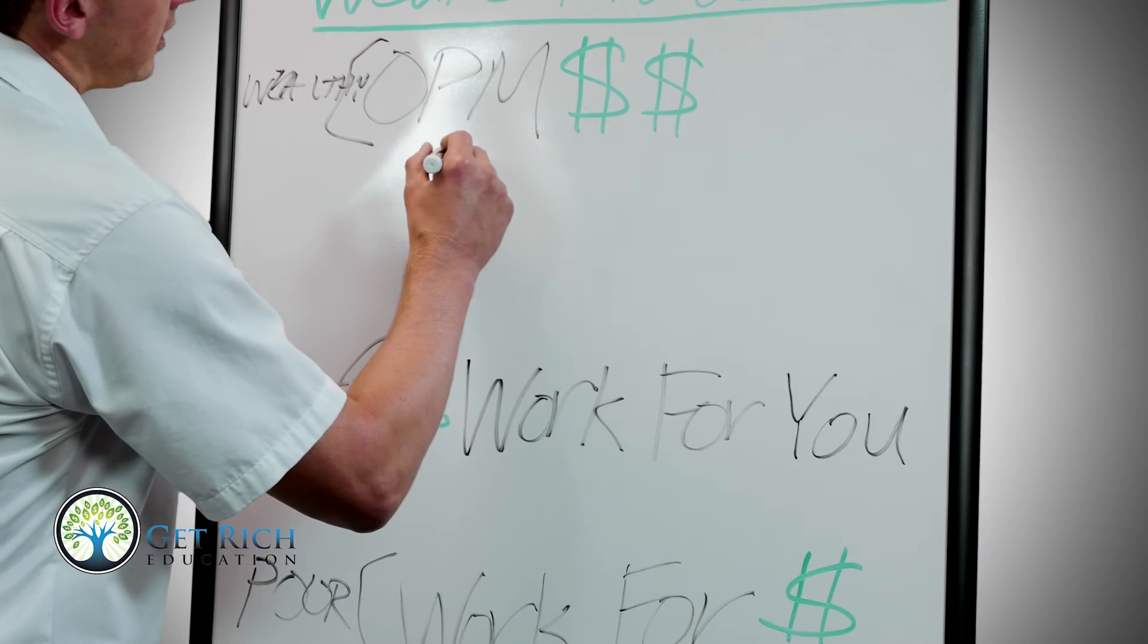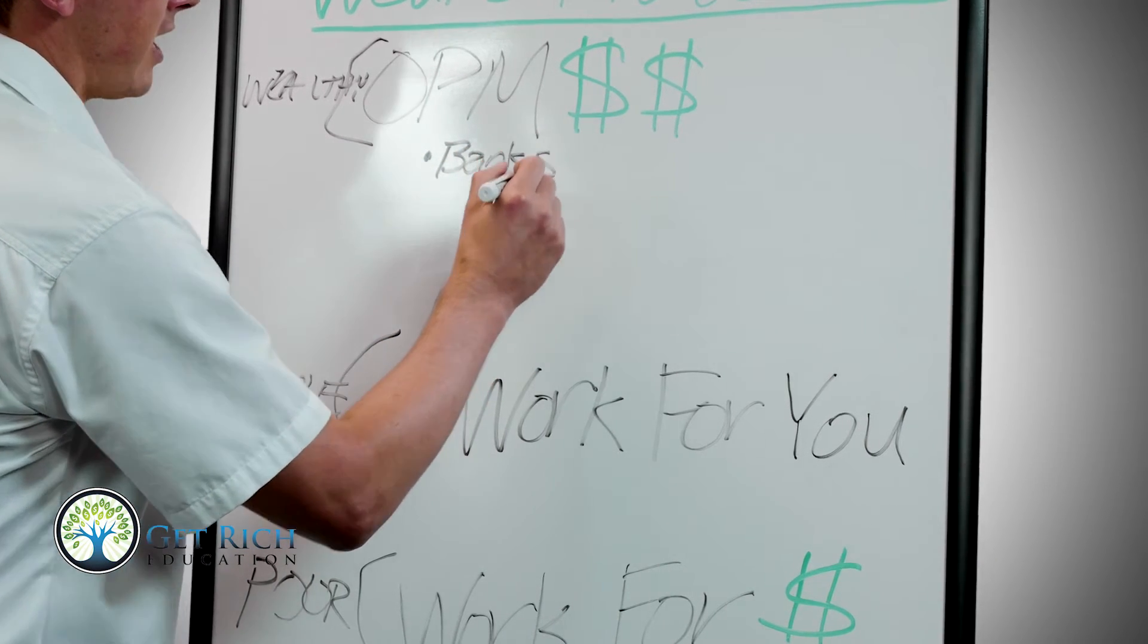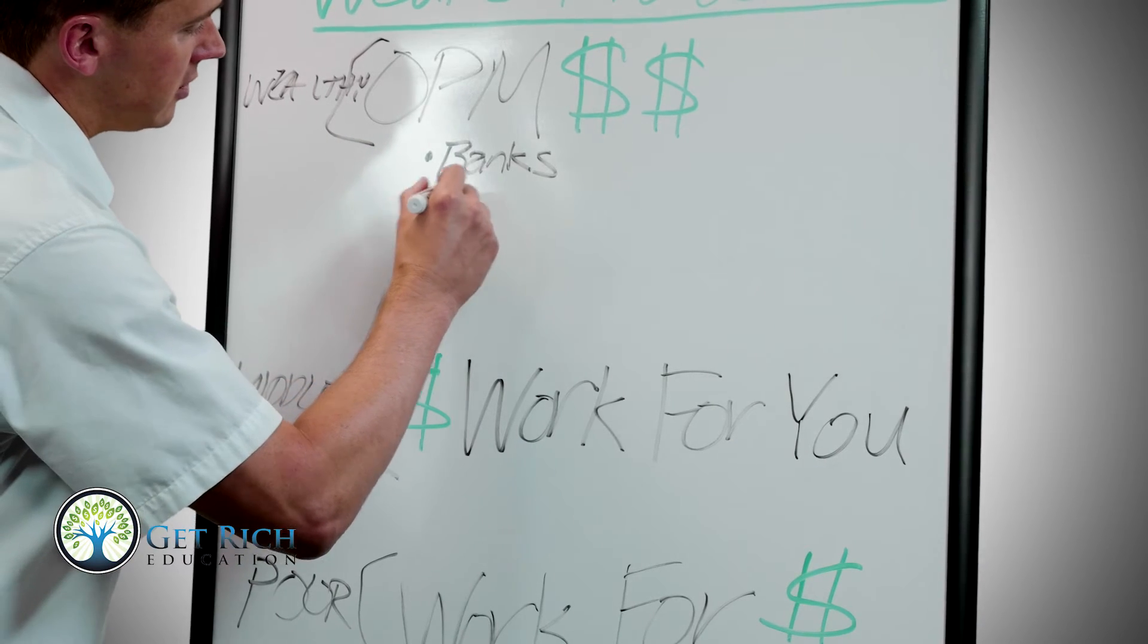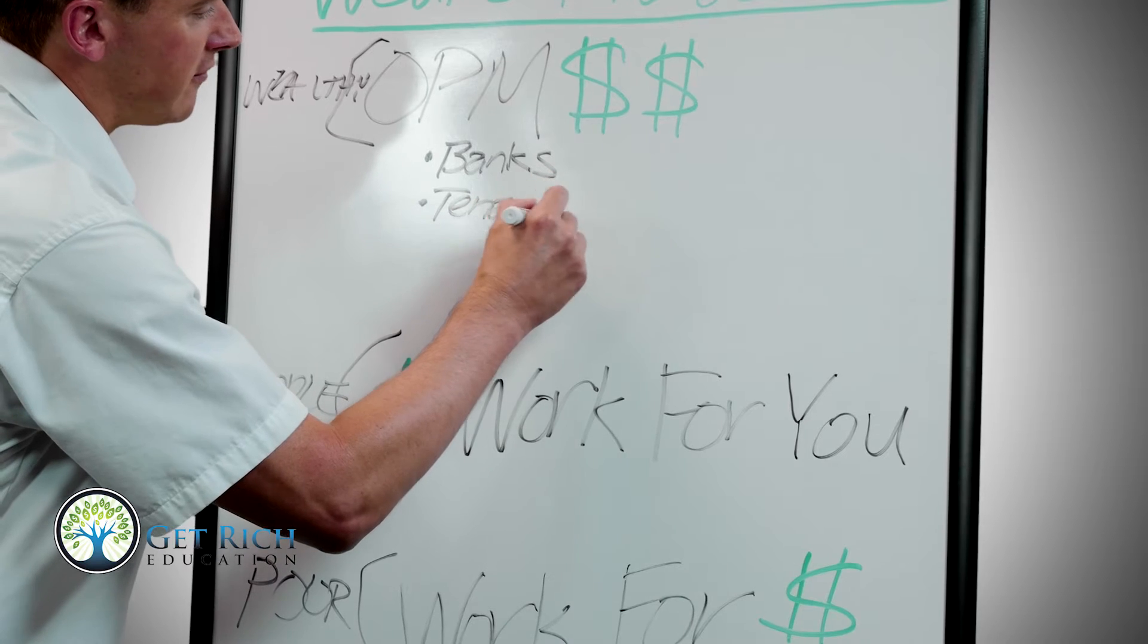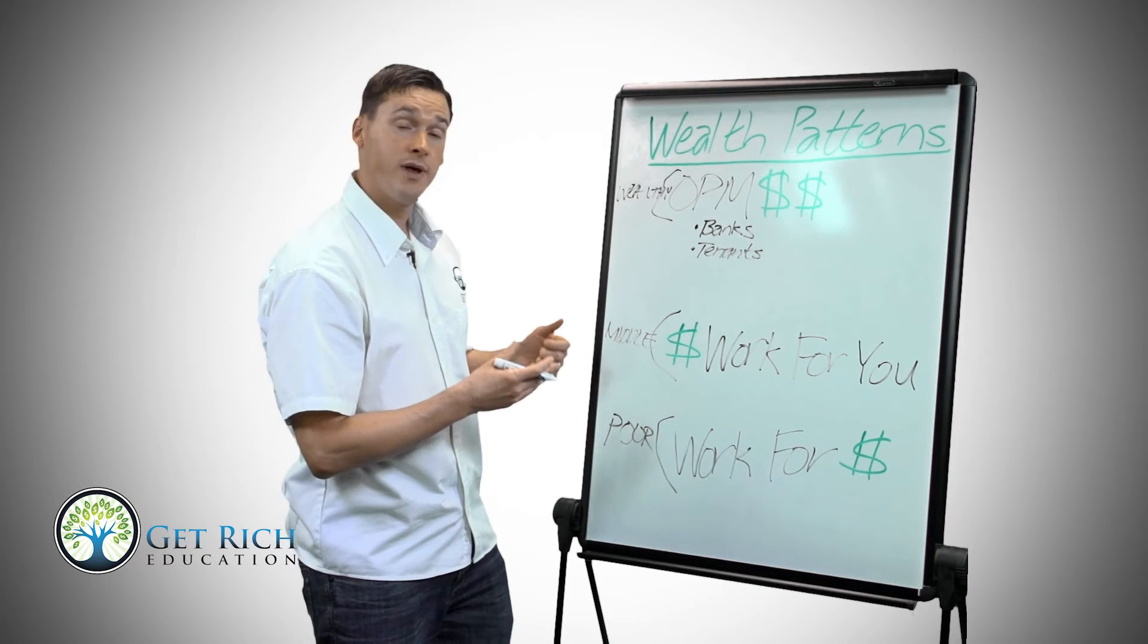The first way is you use the bank's money, other people's money, to create high rates of return with financial leverage. Secondly, you're making use of the tenant's money for monthly income and principal pay down on your loan made by the tenant.